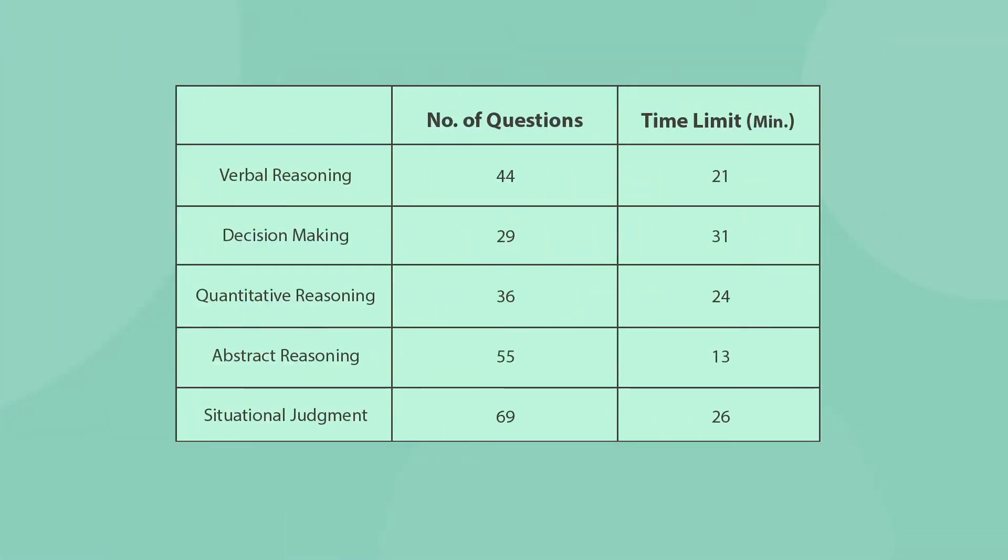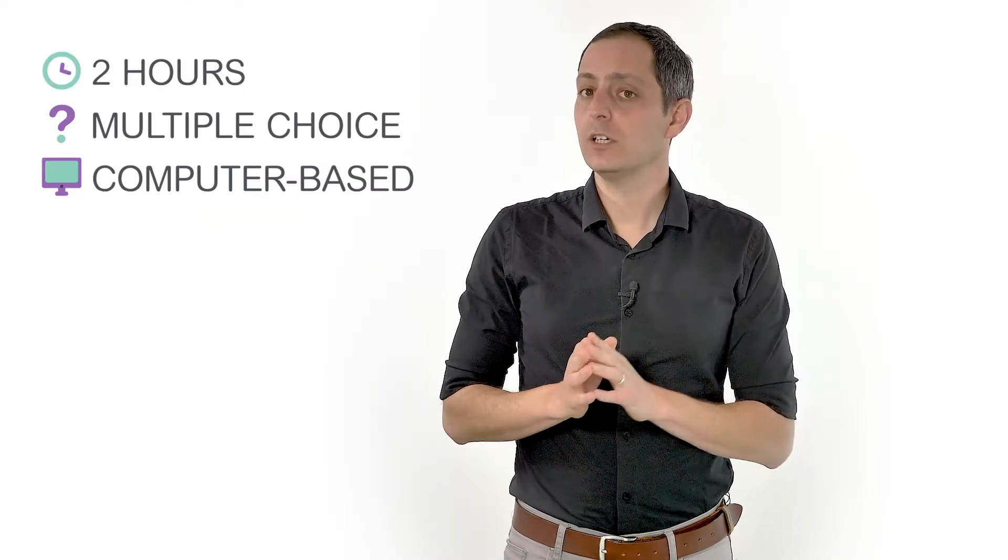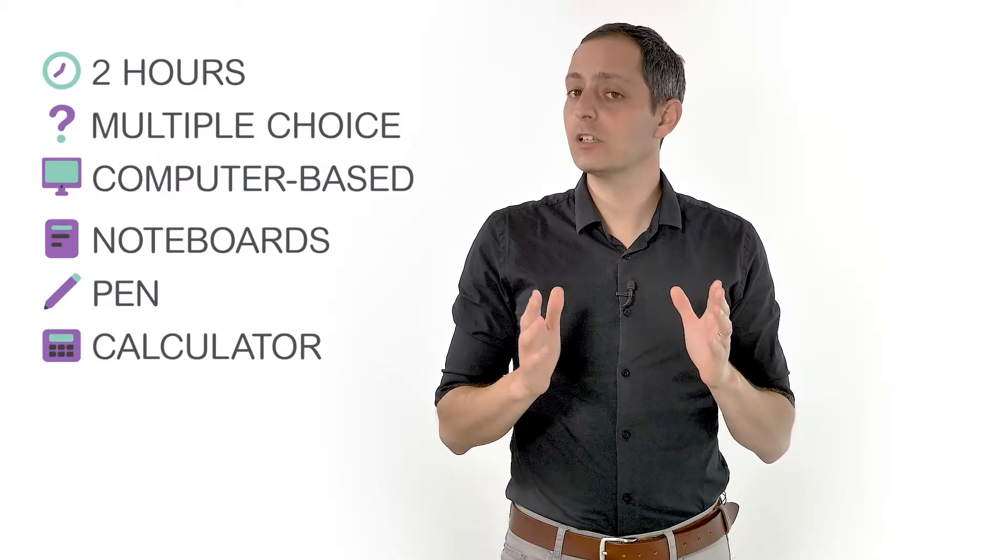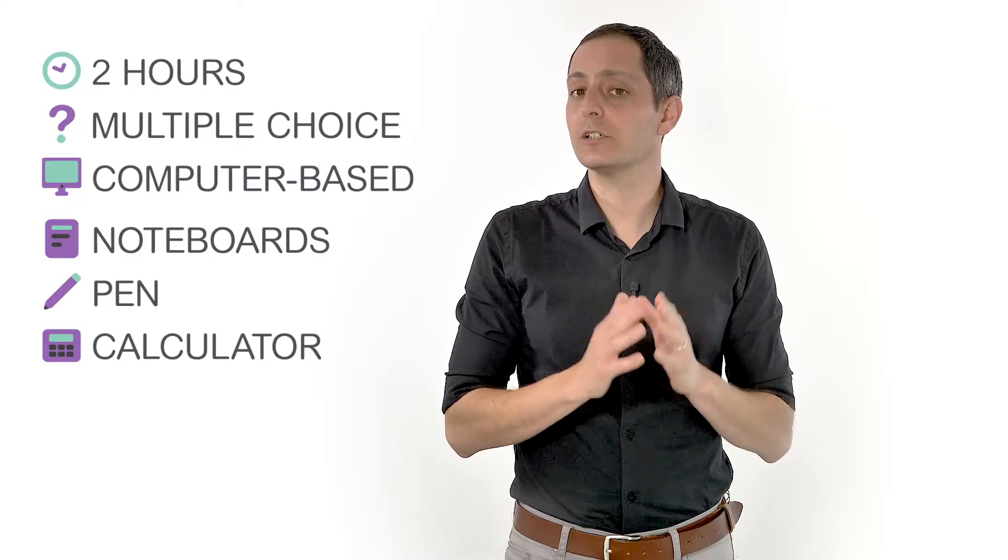The UCAT test is made up of five separate subtests. Every section has a different time limit and different number of questions. It's a two-hour multiple-choice computer-based test. You will be given a set of laminated note boards and a pen. A non-scientific on-screen calculator is implemented in the test interface. The UCAT is not a test of knowledge, but a test of mental abilities. That means the questions are very different from anything you've experienced before in school or university. Now let's go over each of the UCAT sections and solve some sample questions.